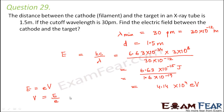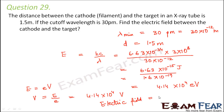The potential difference is 4.14 × 10⁴ volts, since the electron-volt conversion factors cancel out. To find the electric field, we use the potential gradient: E = V/d. So the electric field equals 4.14 × 10⁴ divided by 1.5 meters, which gives approximately 2.76 × 10⁴ volts per meter.